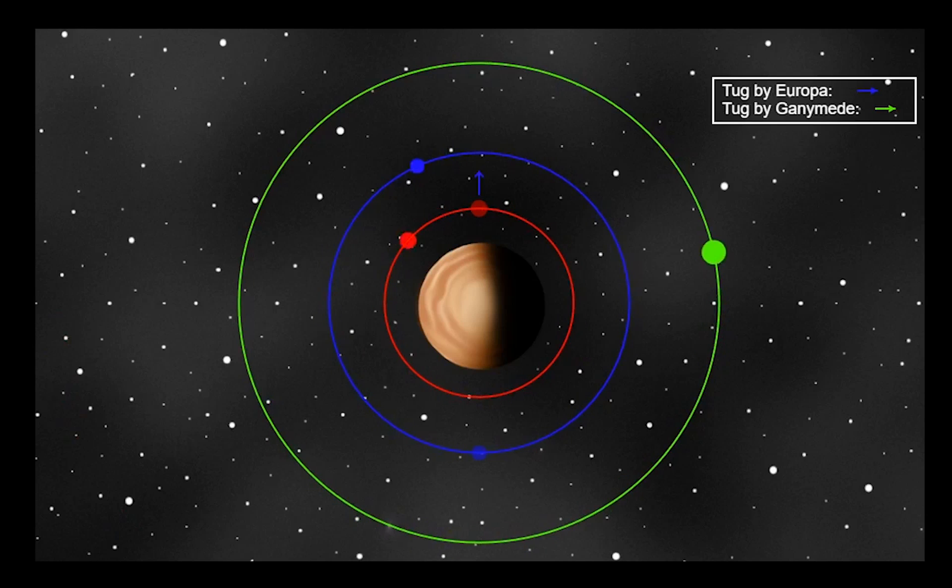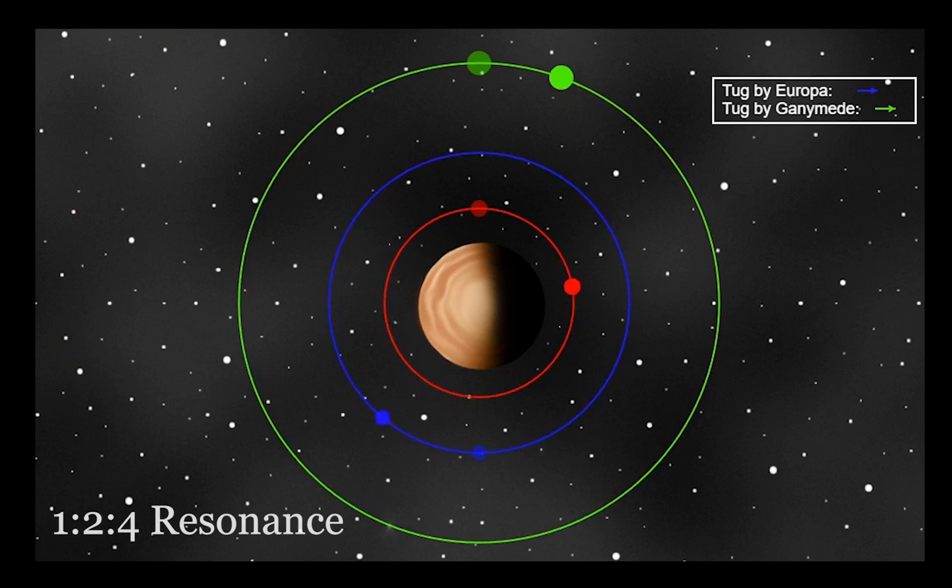Here the four large Galilean satellites are shown. Io in red, Europa in blue, Ganymede in green, and Callisto is shown in orange, but really doesn't have much impact here. Note that the orbital periods are such that in the time that Ganymede makes an orbit, Europa makes two orbits, and Io makes four orbits, a 1-2-4 resonance.